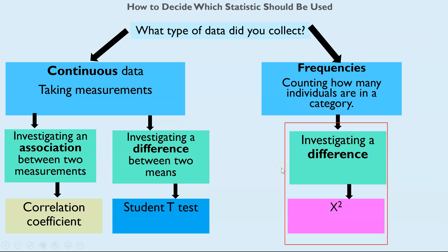Just to recap first of all about the statistic chi-squared — it's one of the three that you need to know for A-level biology. The circumstances where you would use this are when you're investigating whether there's a difference between frequency data. That's going to be the key here: differences between frequency. If you're not confident on chi-squared, I'll link my first video which goes through all the details. In this video I'm just going to show you how it can be applied to inheritance questions.